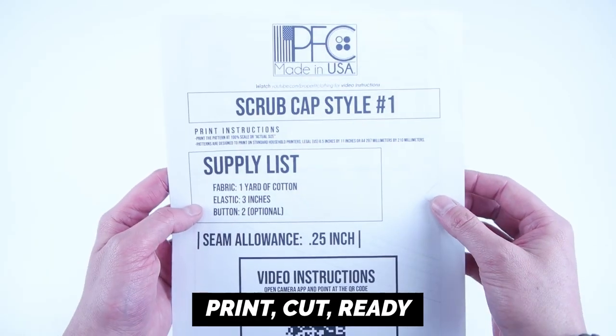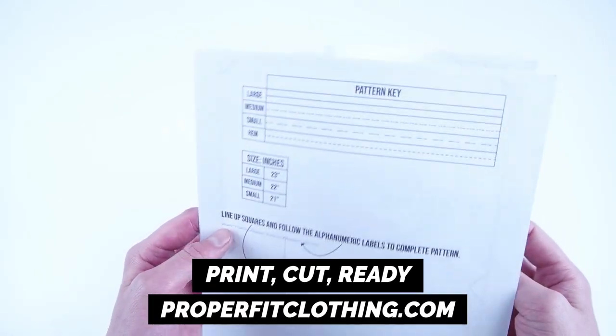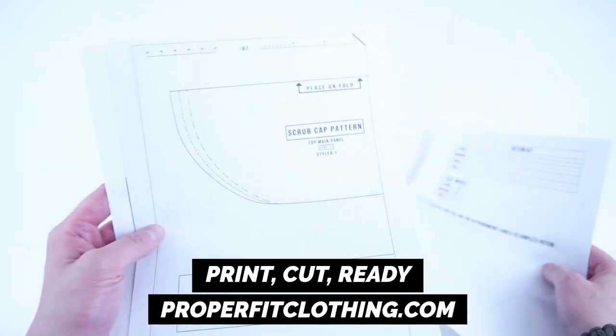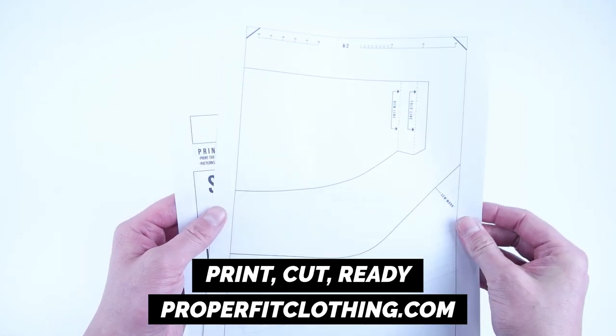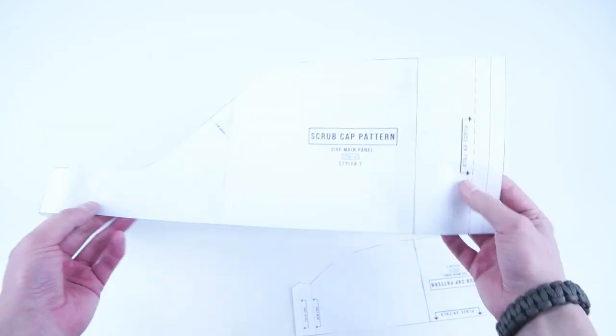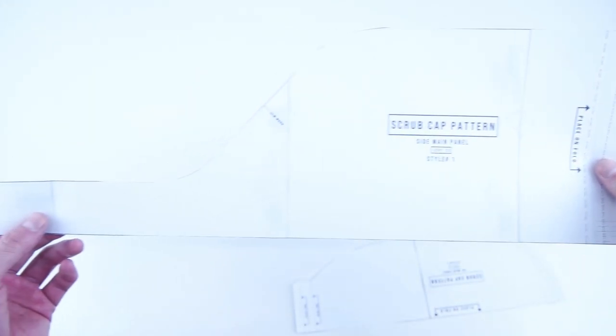And lastly your pattern, and this pattern is available at properfitclothing.com. They're super easy to use. All you have to do is print it, cut it, and you're ready to go. And everything will be linked down in the description from the supplies to the pattern. And this pattern comes in multiple sizes, so cut out the size that works best for you.